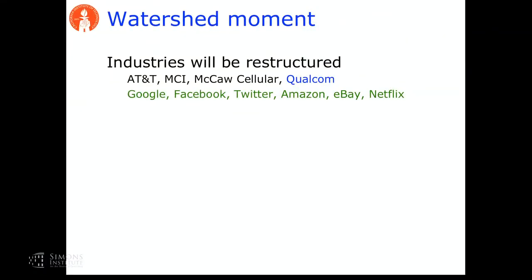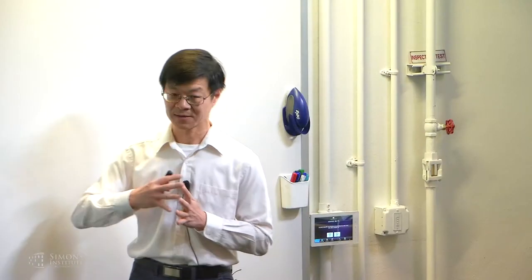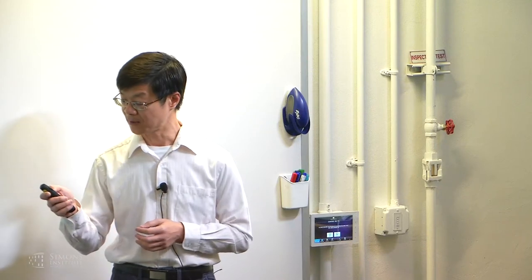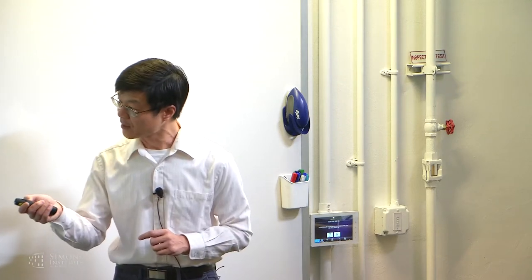What will drive this transformation? In that transformation, if you look at what happened with telecom, the industries have been restructured — some of the biggest companies didn't exist 20-plus years ago. The engineering structure has been changed dramatically from a centralized, intelligent, vertically optimized structure to a distributed layer architecture. If there's one single element that is most important, it will be the layer architecture.